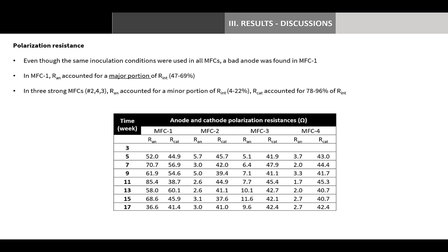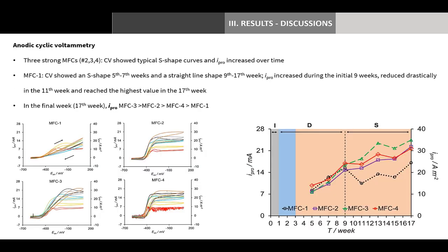For more accurate measurement of anode performance, anodic CV was performed. Because a potentiostat regulates anode potential with an external power source, the influence of other factors can be minimized. In the three strong MFCs, CV showed typical S-shaped curves and current production increased over time. However, in MFC1, CV showed an S-shape and a current plateau in the 5th and 7th weeks. From the 9th to the 17th week in MFC1, its CV showed a straight-line shape. Current production increased during the initial 9 weeks, reduced drastically in the 11th week, and reached the highest value in the 17th week.